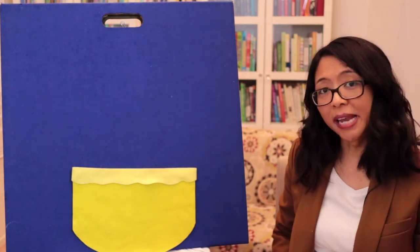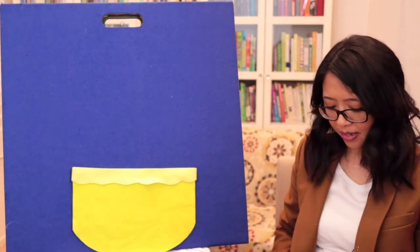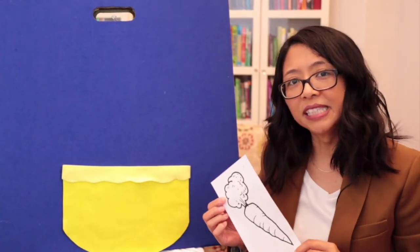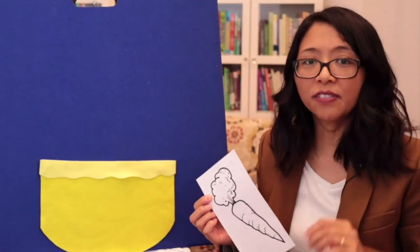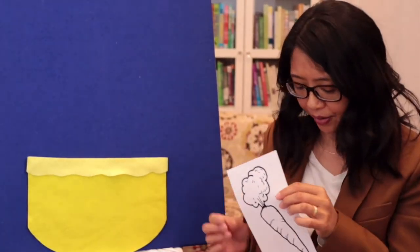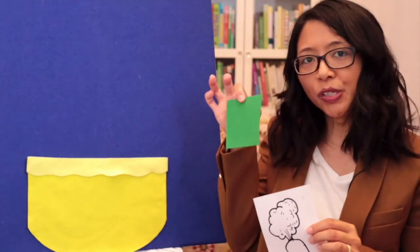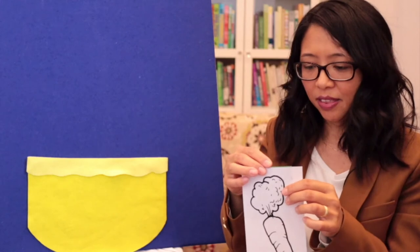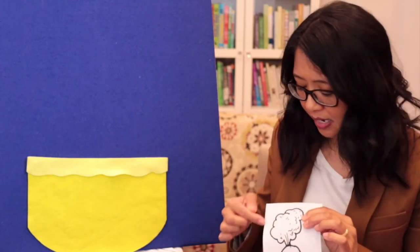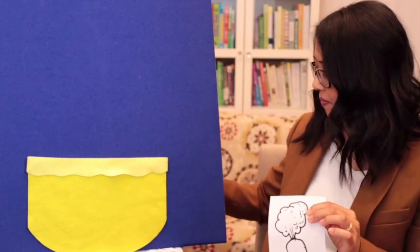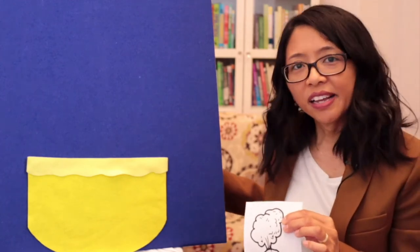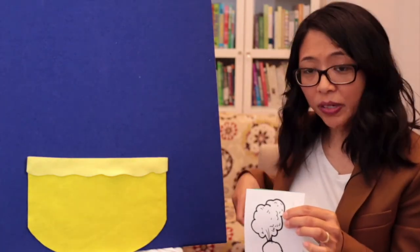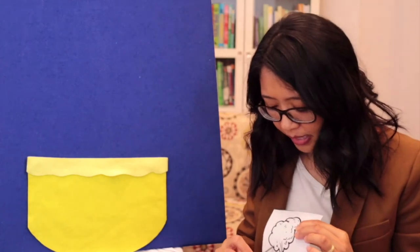And to make the vegetables, I printed a picture of a vegetable. This is a carrot. And what you can do is use some fabric and place it right behind the picture. And then, with a grown-up's help, you could cut it out.